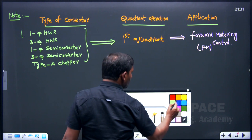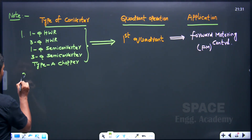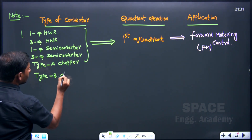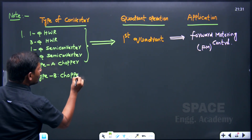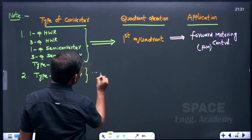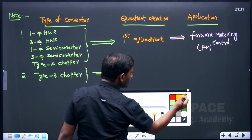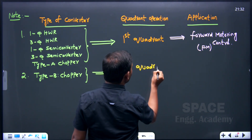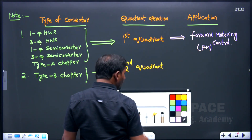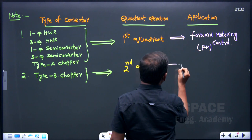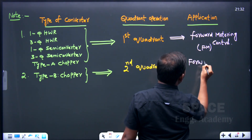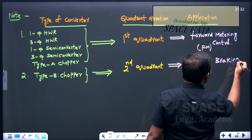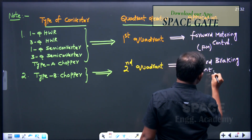The second one is Type B chopper. Type B chopper is operated only in the second quadrant. It is used for forward braking control, abbreviated as FB.